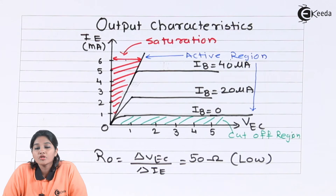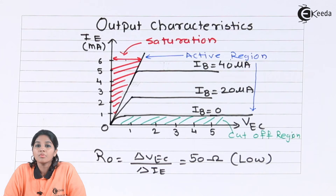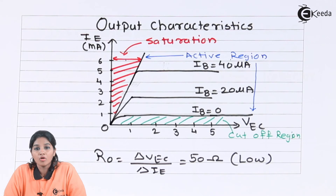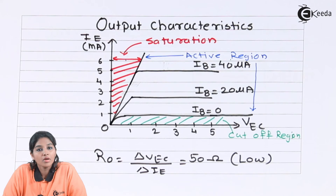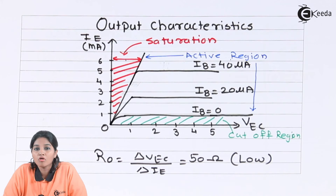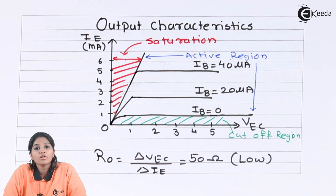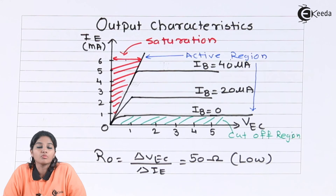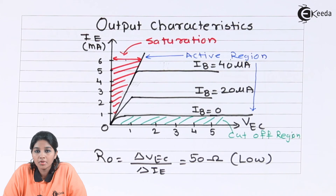The common collector configuration is not as practically used as common emitter or common base configurations, because it shows similar behavior to common emitter configuration. It is mostly used as an emitter follower when feedback is applied. So that concludes the input and output characteristics of common collector configuration. I hope you understood the topic.